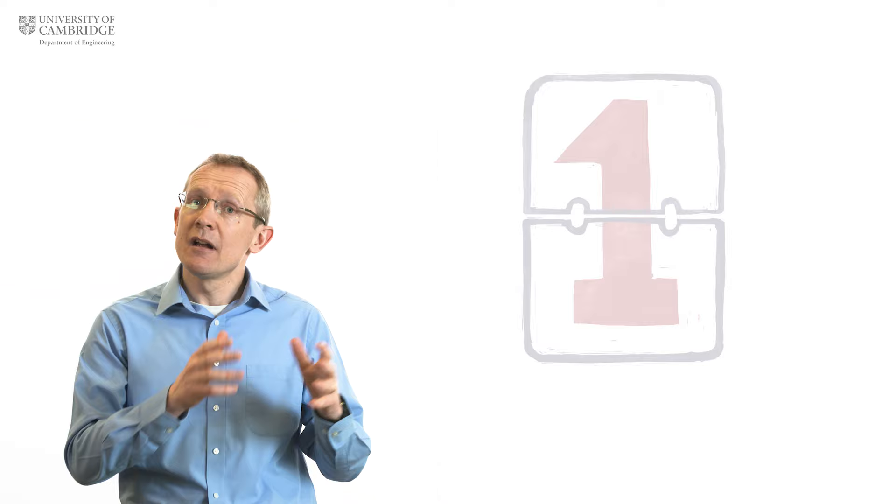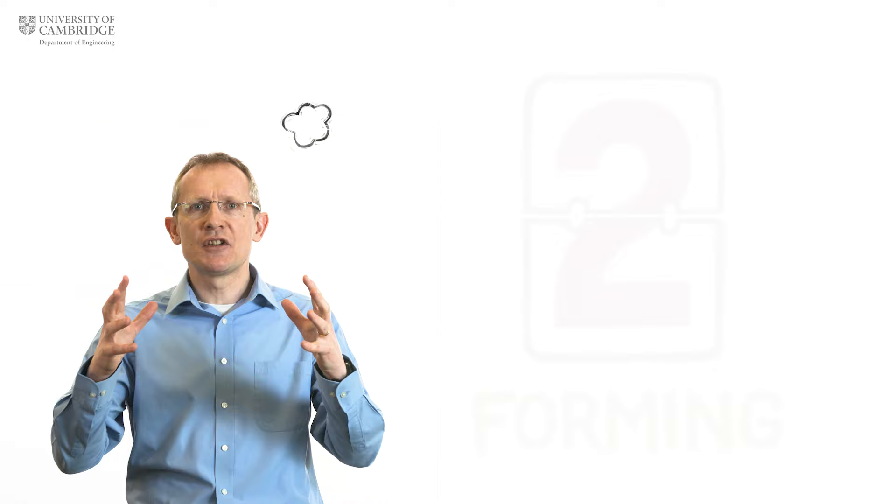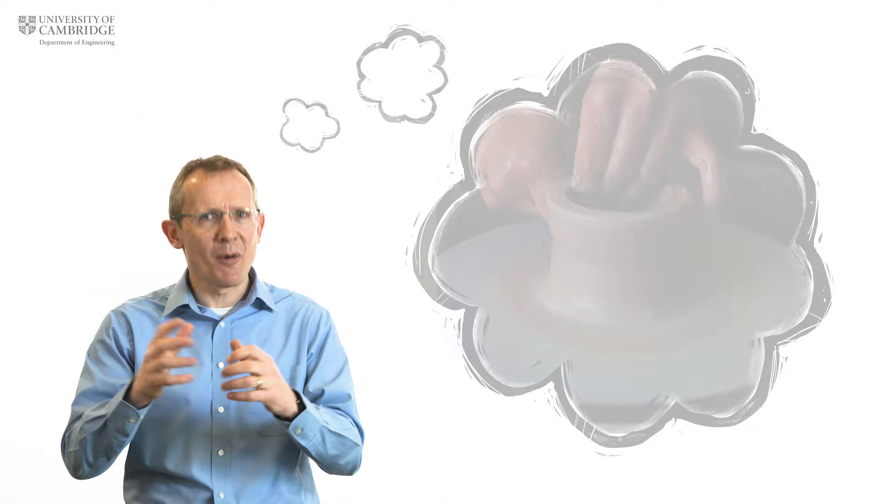The second way of making stuff is called forming. Here, we take a block of material and apply a force to change its shape. My personal favorite of a formed object is Wallace and Gromit, made by shaping or forming plasticine.